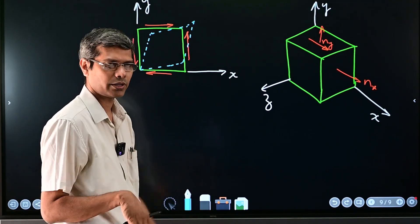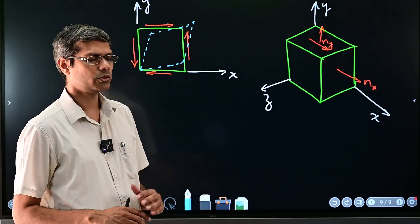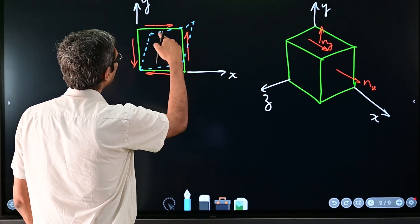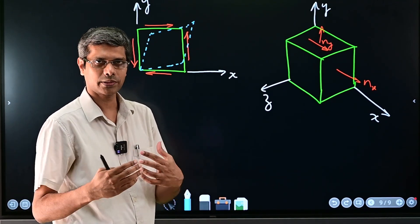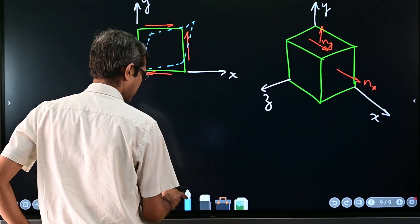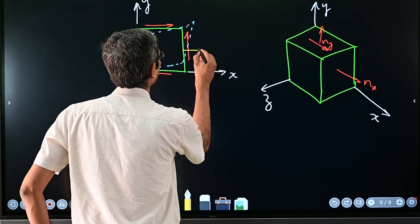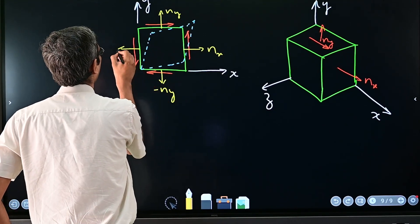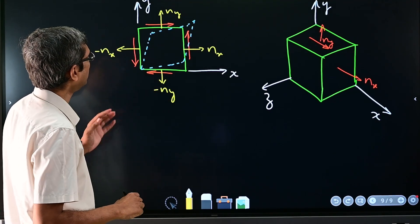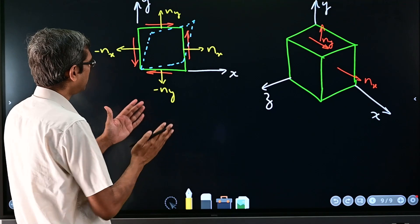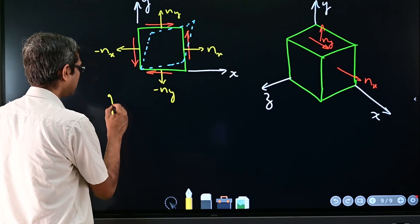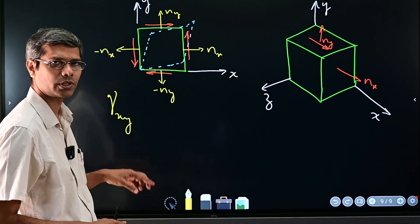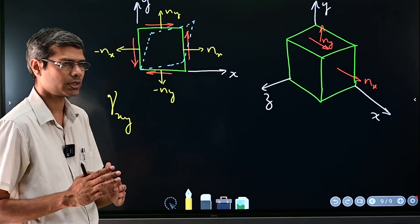So these lengths will remain same and it will just be squeezed in a way. Now we are in a position to define the strain in terms of what we have discussed. Because we are dealing with two pairs of planes whose normals are in x and y direction, those are the planes which are involved in defining this strain, we say that this is gamma_xy.